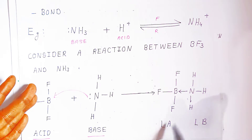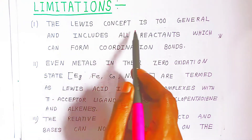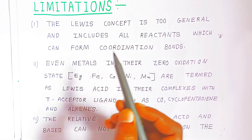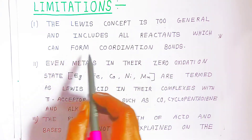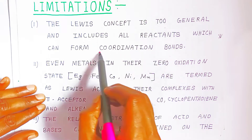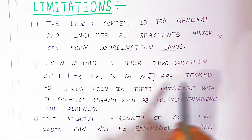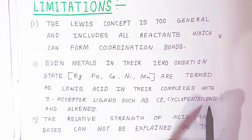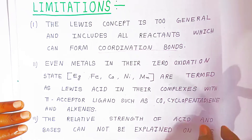Now what are the limitations of Lewis theory? The Lewis concept is too general and includes all reactants which can form a coordinate bond. Even metals in their zero oxidation state — such as iron, cobalt, nickel, and manganese — are termed Lewis acids in their complexes with pi-acceptor ligands such as cyclopentadiene and alkenes.